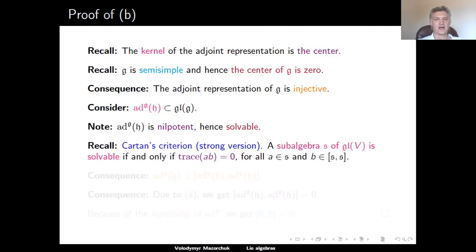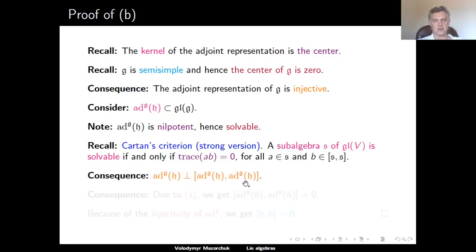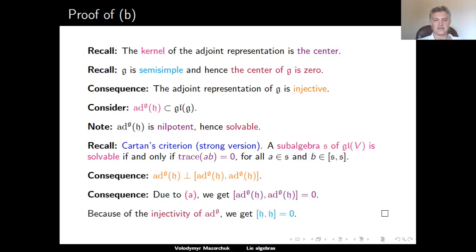We use the most general version of Cartan's criterion for solvability, which says that a subalgebra S of some general linear algebra is solvable if and only if for any element A in S and any element B in the commutator of S with itself, the trace of AB is zero. Applying this to our solvable algebra ad G of H, the image of H under ad G must be orthogonal with respect to the killing form to the derived algebra of this image. Since the restriction of the killing form of G to H is non-degenerate, this orthogonality forces the derived algebra to be zero. Since the adjoint representation is injective, the first derived algebra of H is zero, so H is indeed abelian. This completes the proof of Part B.